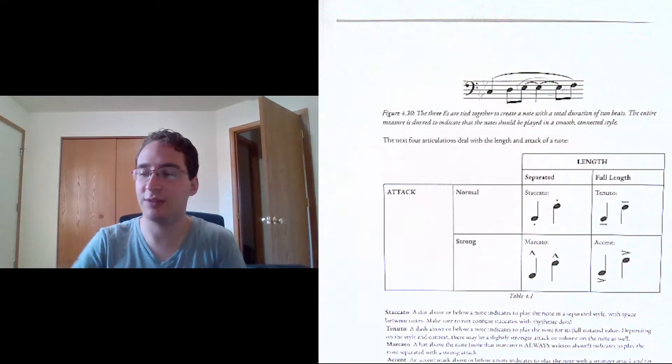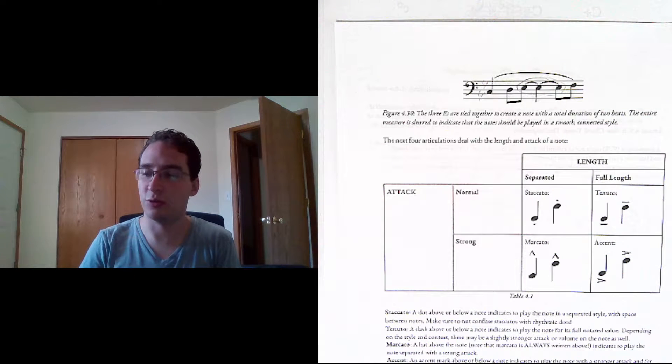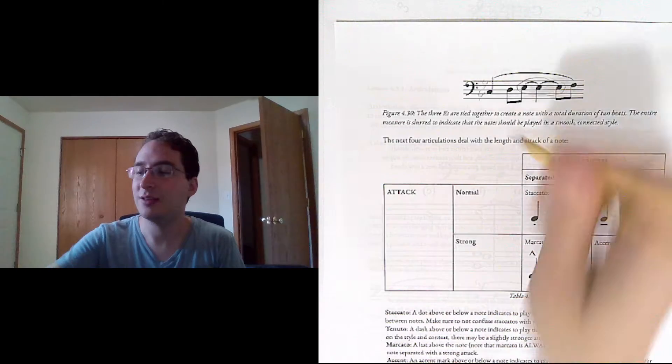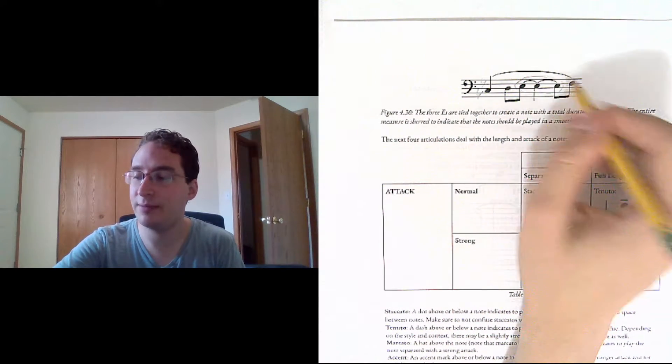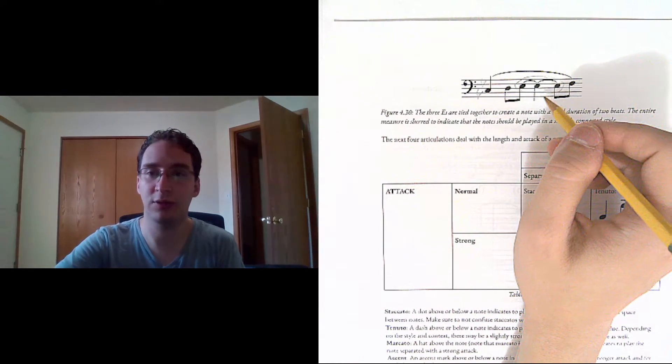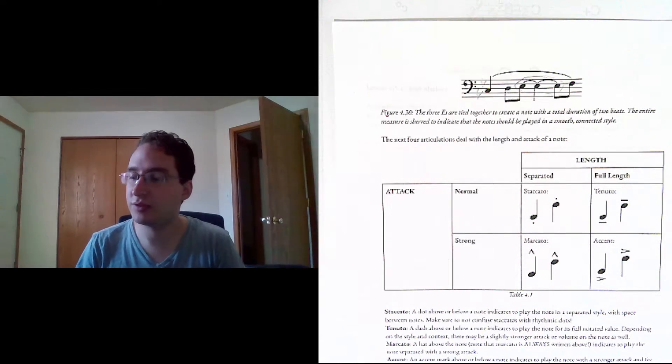So this passage would sound like this. The slur means that it needs to be connected. The tie means that this is a single note. Or the ties.